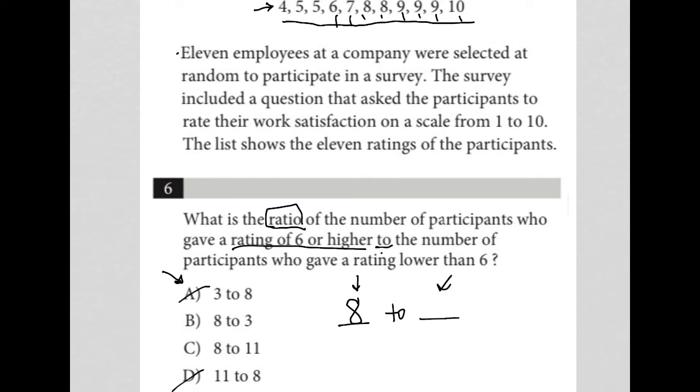So 2, which matches up with this 2 here. The number of participants who gave a rating lower than 6. How many participants gave a rating lower than 6? That's just 1, 2, and 3. So the number 3 goes here. So our ratio is 8 to 3, and therefore our answer is choice B.